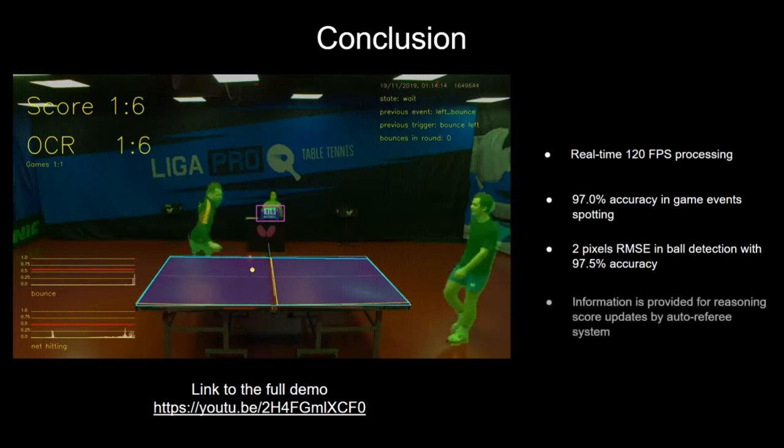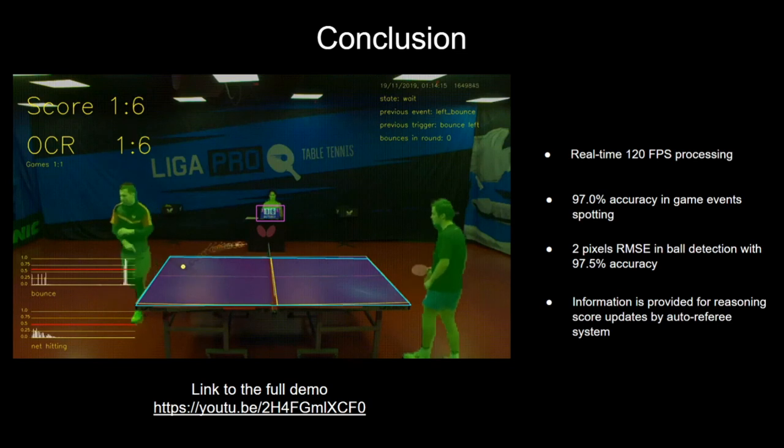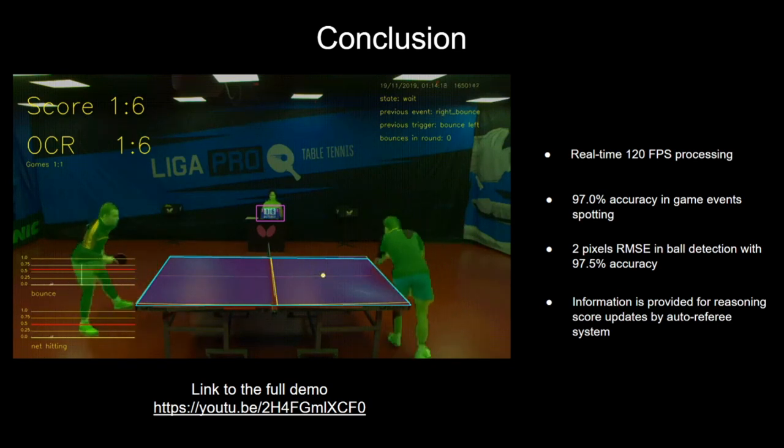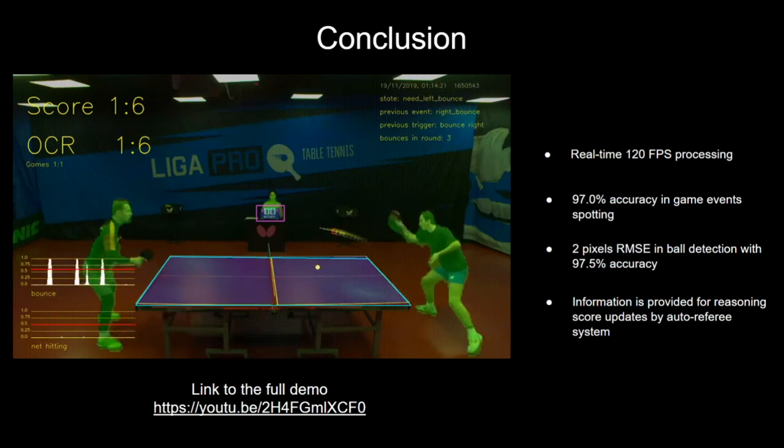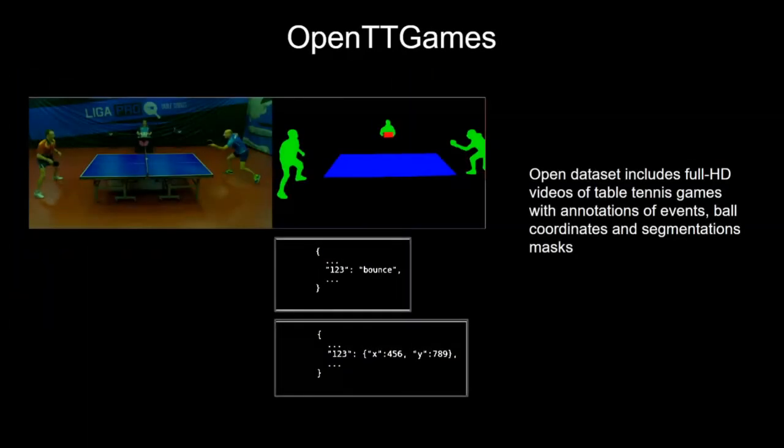The network output information, implemented with event spotting algorithm, enables complete auto-referee solution for table tennis. Due to the absence of multitask datasets combining temporal and spatial data, we also introduced OpenTT Games dataset. It includes full HD 120 FPS videos of table tennis with annotations of events, ball coordinates, and segmentation masks.